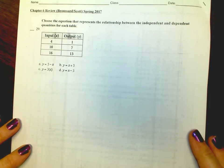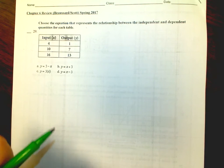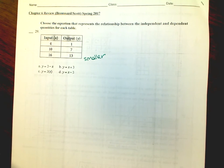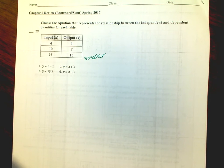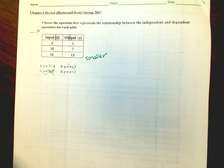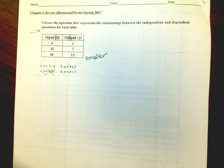Last one, number 29: Choose the equation that represents the relationship for each table. The x is getting smaller going to y, so it's usually not adding or multiplying — that eliminates two choices. Substitute your x into the remaining options and see if you get your y.